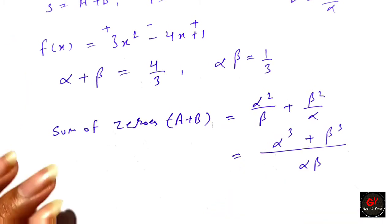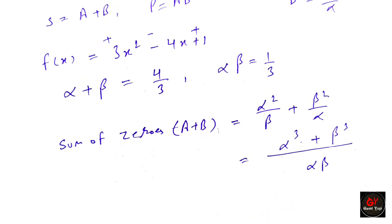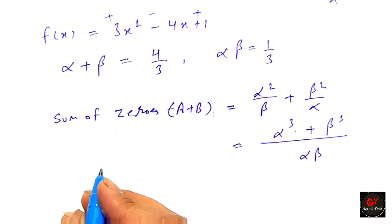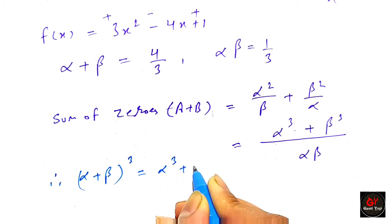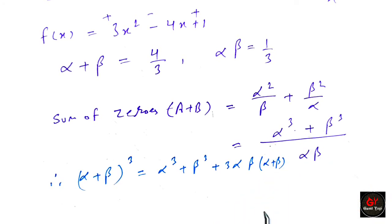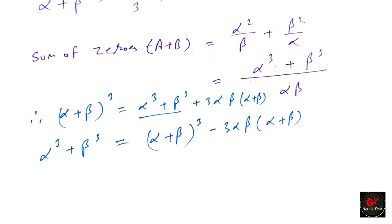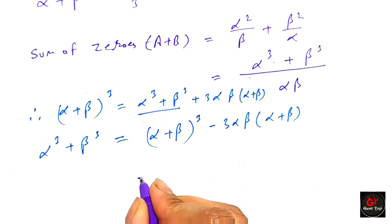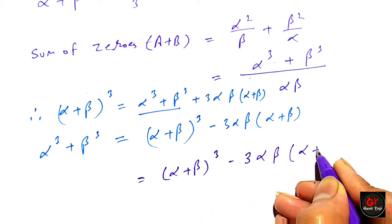We have the alpha beta value, but we need to express alpha cubed plus beta cubed in terms of alpha plus beta and alpha beta. We use the identity: alpha plus beta to the power 3 equals alpha cubed plus beta cubed plus 3 alpha beta times alpha plus beta. Therefore alpha cubed plus beta cubed equals (alpha plus beta)³ minus 3 alpha beta times alpha plus beta.